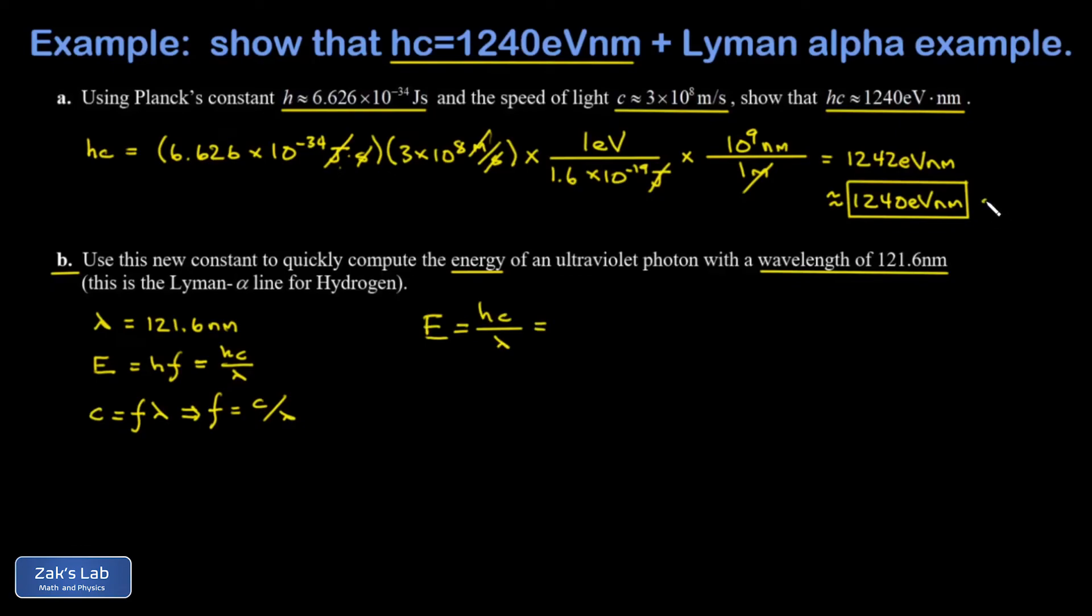Once you have this convenient constant memorized, 1240 eV nanometers, and you can use 1242 if you want to be a little more precise, I can just plug in the wavelength in nanometers. The nanometers cancel. And the energy of this photon pops out in electron volts. And I get roughly 10.2 eV for this photon.